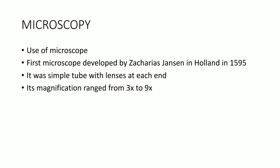The first topic is microscopy. The use of a microscope is known as microscopy. The first microscope was developed by scientist Zacharias Janssen in Holland in 1595. It was a simple tube with lenses at each end, and the magnification power of this microscope was three to nine times. It was the simplest microscope because it was the first one invented in 1595.